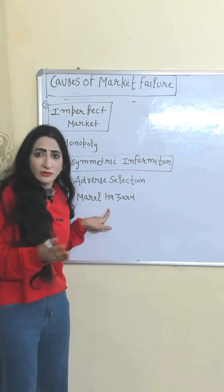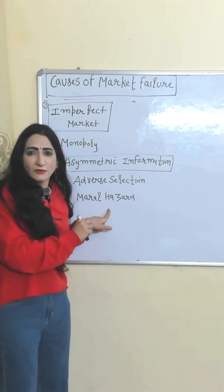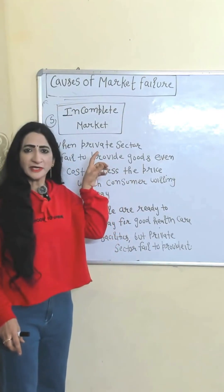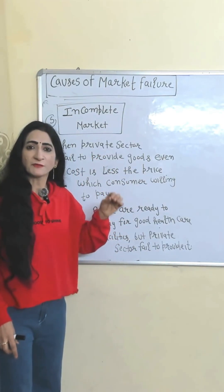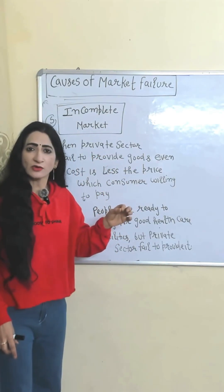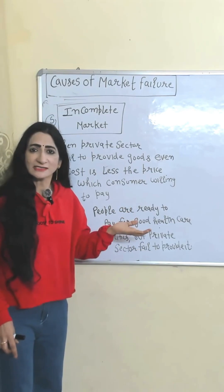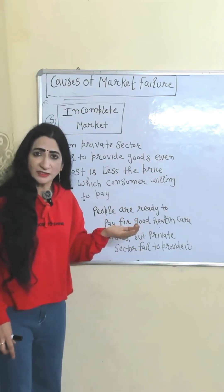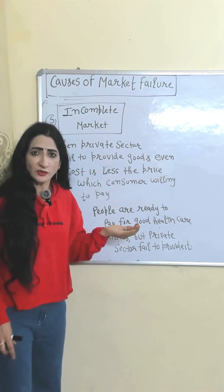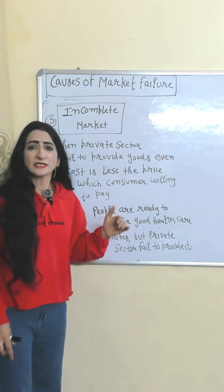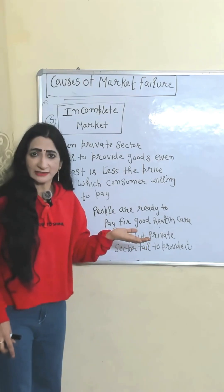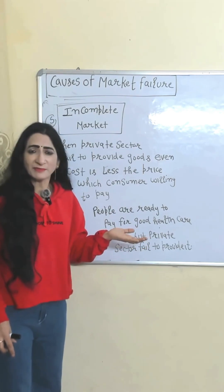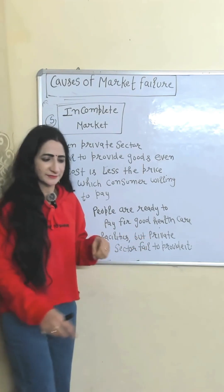Incomplete markets occur when the private sector fails to provide goods even when the cost is less than the price consumers are willing to pay. For example, people are willing to pay for good healthcare facilities, but sometimes the private sector fails to provide them.